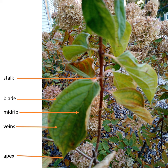Examples of monocots are: bamboo, bananas, corn, garlic, ginger, onions, rice, sugarcane, tulips, and wheat. Monocots are mostly bulbing plants and grains.